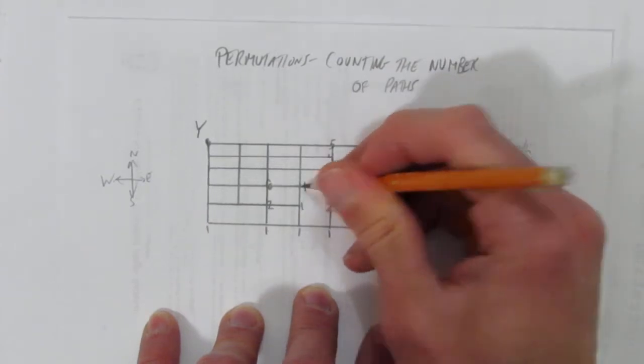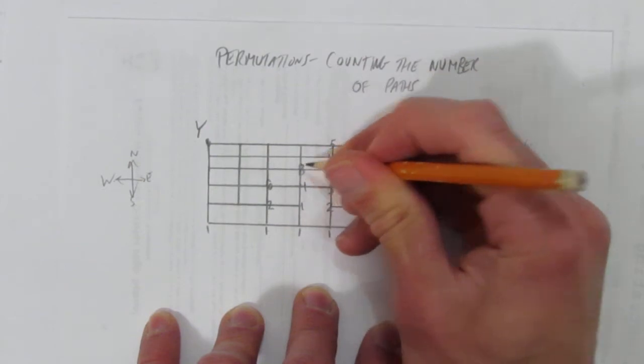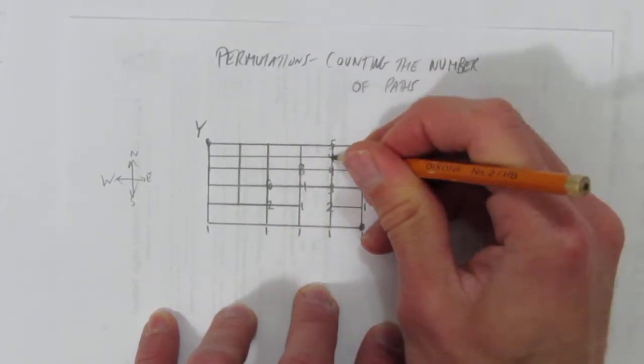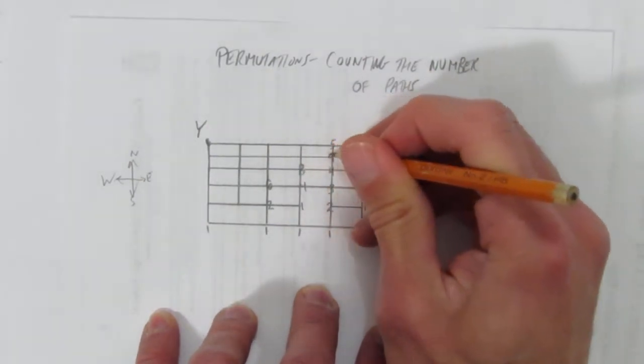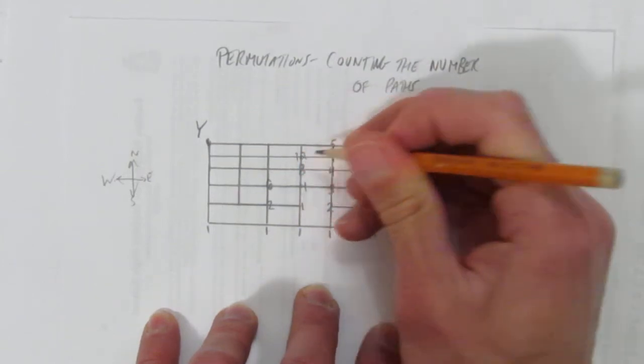Four to get to this intersection. Four to get to this intersection. So that would mean this is an eight. This was a four. This is a twelve. Sorry, this is a four. This is an eight. So the answer, there are twelve ways to get to this intersection.